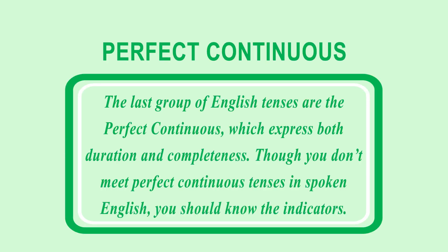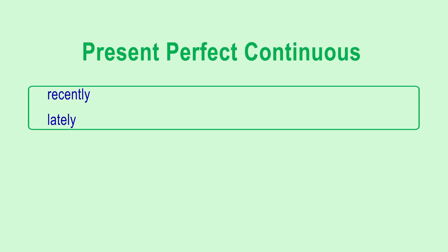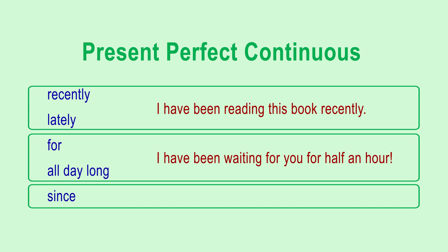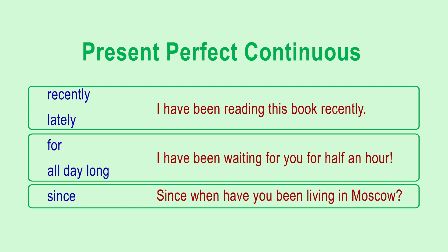The last group of English tenses is the perfect continuous, which expresses both duration and completeness. Though you don't meet perfect continuous tenses in spoken English often, you should know the indicators. The present perfect continuous tense uses: recently, lately, for, all day long, since. Examples: I have been reading this book recently. I have been waiting for you for half an hour. Since when have you been living in Moscow?